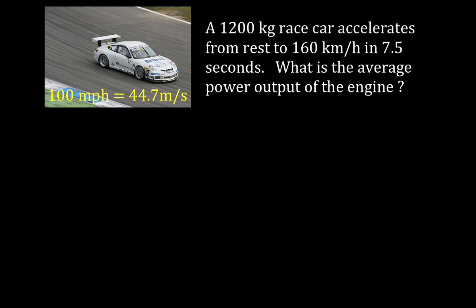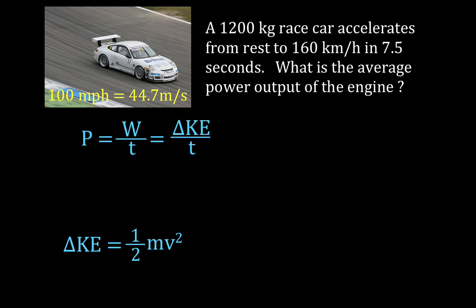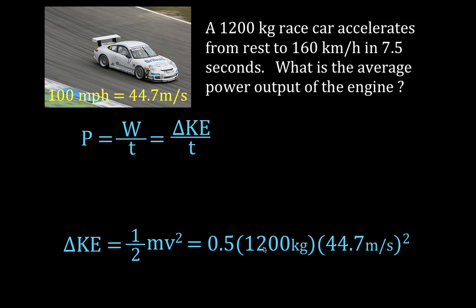For way number two, we're going to use power equals work divided by time, but work is also equal to change in energy. We'll use the change in kinetic energy because the car is moving horizontally, not vertically, so there are no changes in potential energy. The initial kinetic energy is zero because the car was at rest. The final kinetic energy is one half mv squared: 0.5 times 1200 kilograms times 44.7 meters per second squared, giving a change in kinetic energy of 1.2 times 10 to the 6 joules.